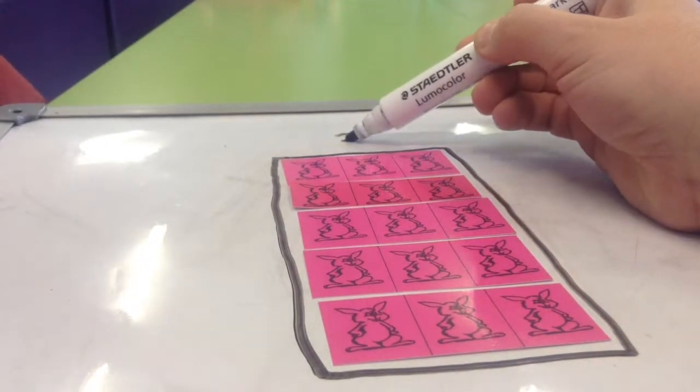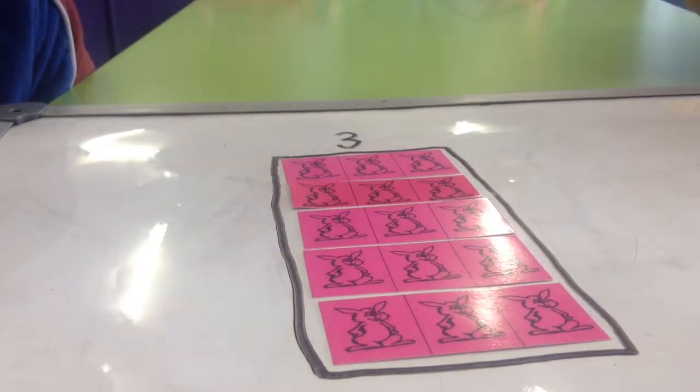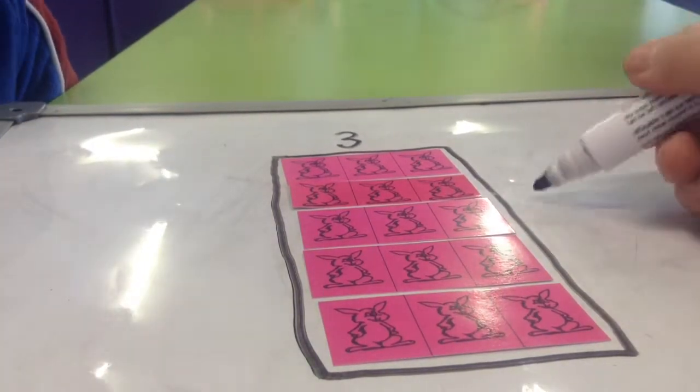So, I'm going to write the number three at the top. Now, how many bunnies are there if we look down this way? Five. Five. Okay.